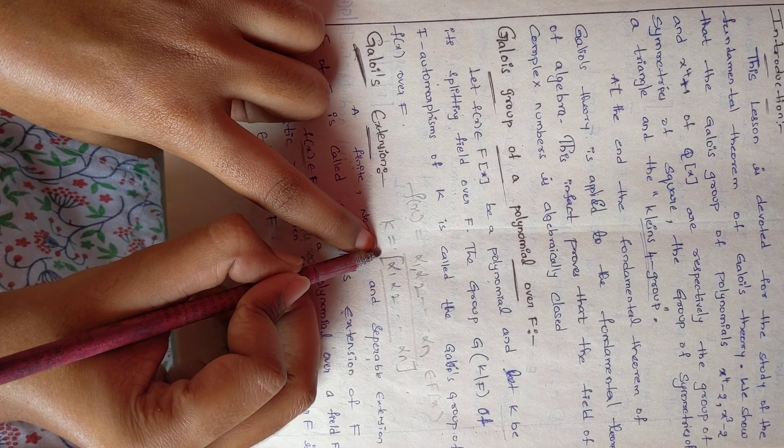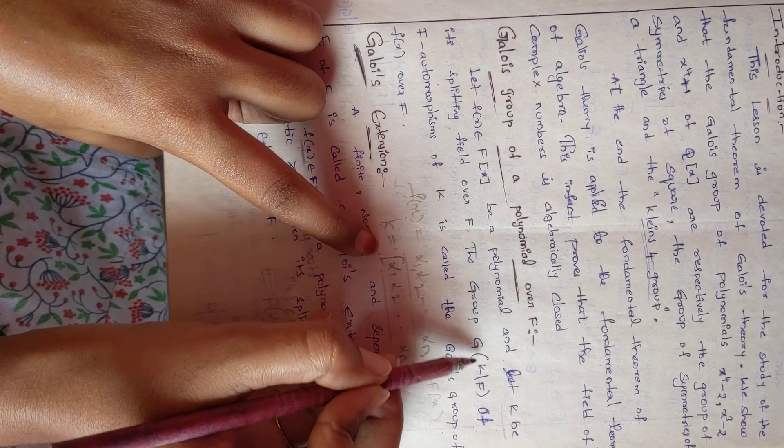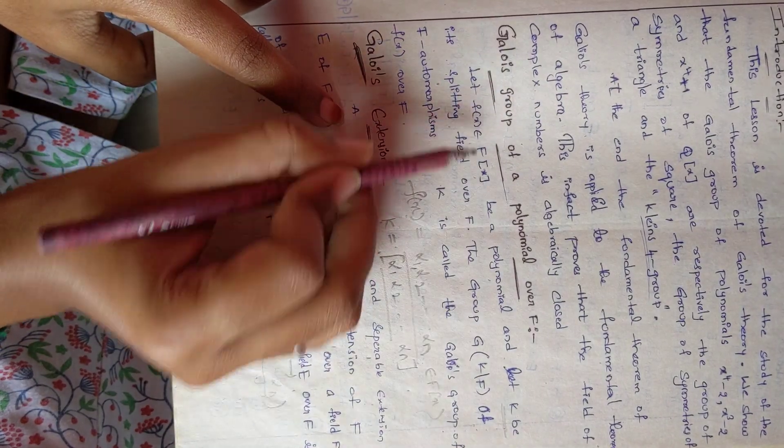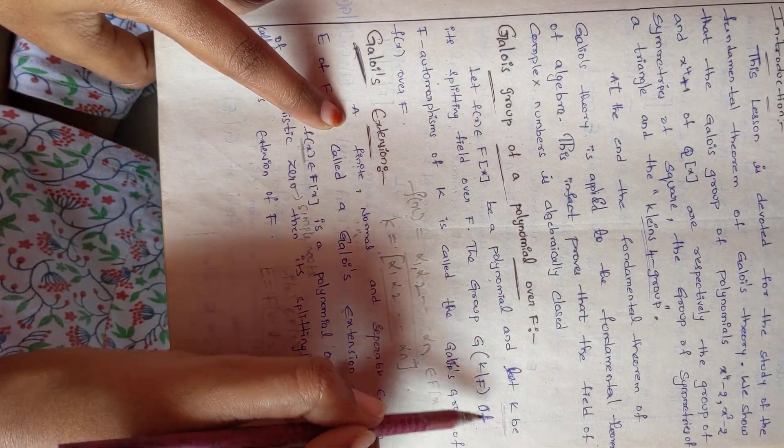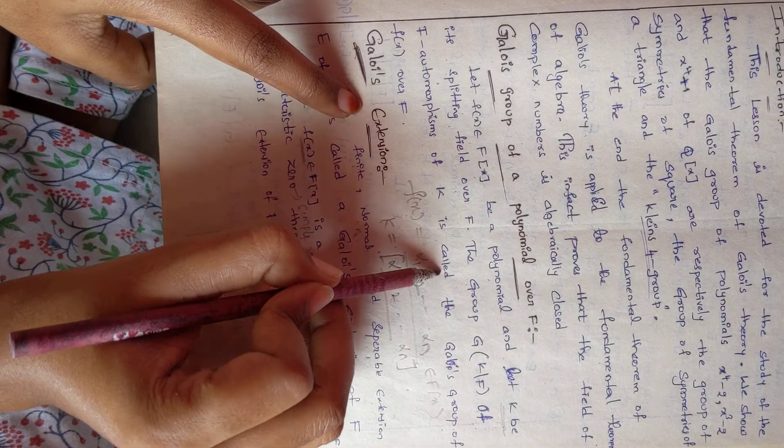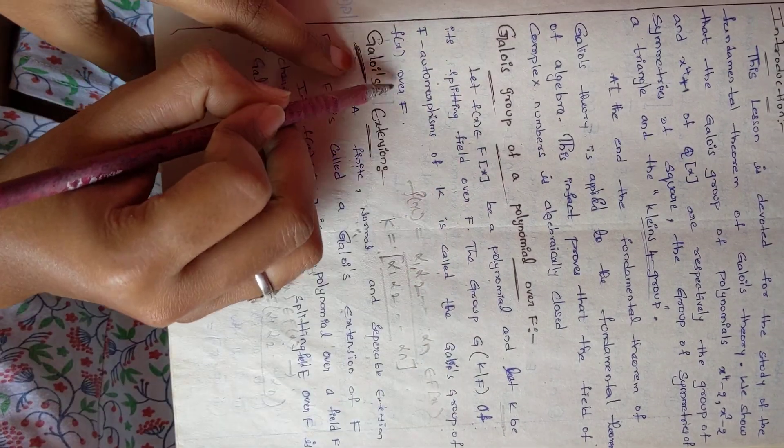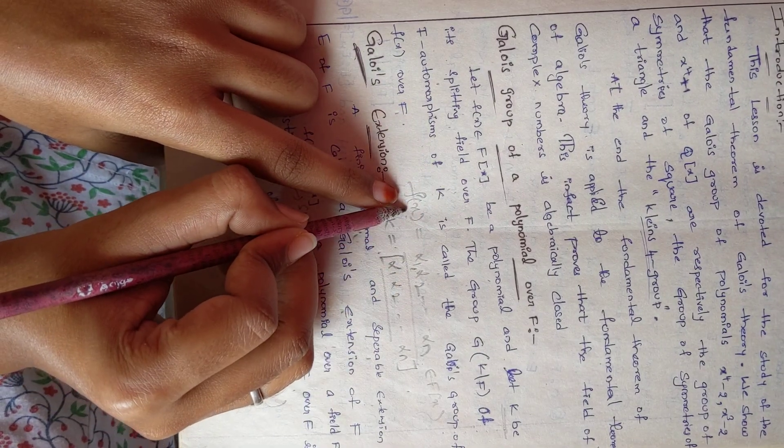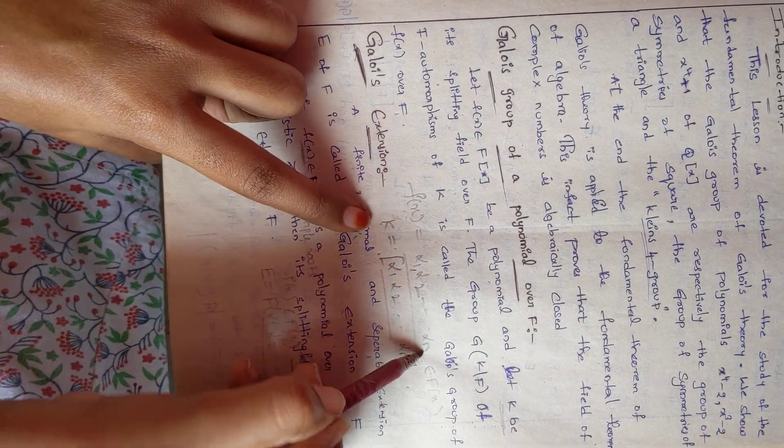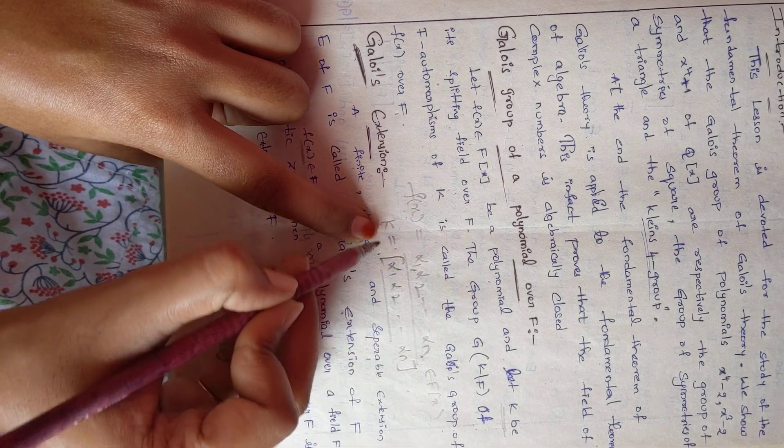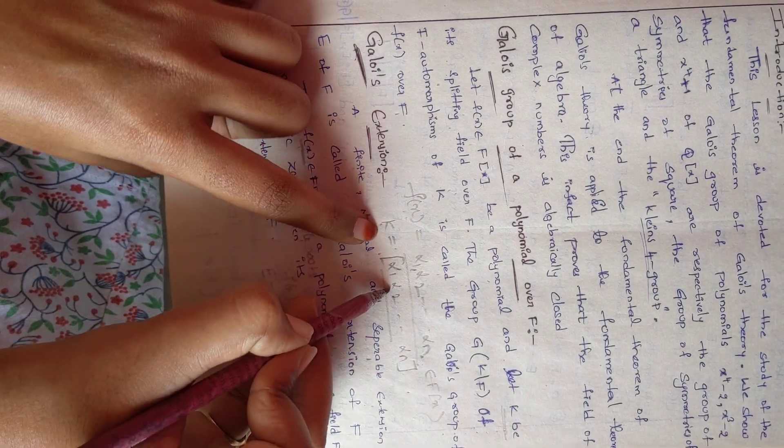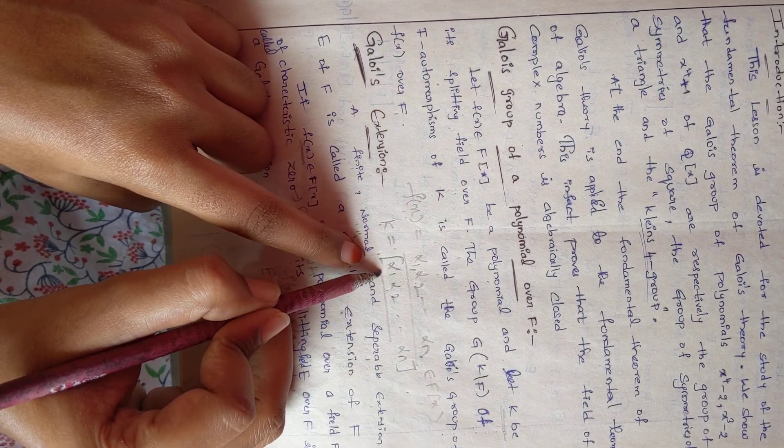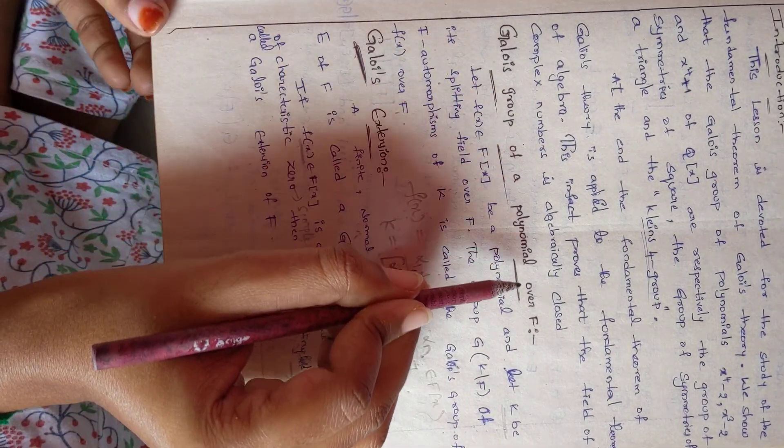Now by automorphism group definition, the group G(K/F) where K is the fixed field of the polynomial, this group G(K/F) of automorphisms of K is called Galois group of f(x) over F. Therefore, f(x) has different roots that exist in the fixed field K.